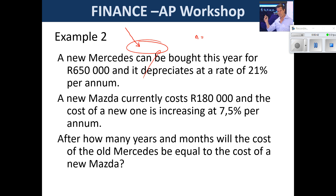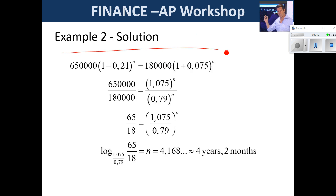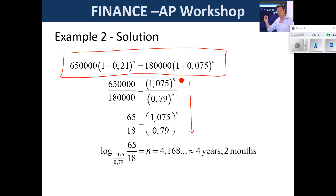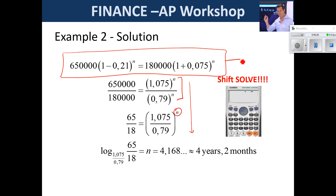We're solving for N, and the time to depreciate and the time to increase in price is exactly the same, so they line up. We create an equation: depreciating at 21% for a certain period equals R180,000 increasing at 7.5% for the same period. Using the exponent law, we divide the fraction parts first and keep the power outside, then create a log and solve. But from the first line, the marks are for creating the equation — use the calculator's solve button for the computation.